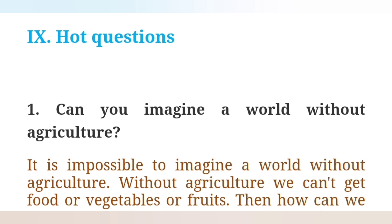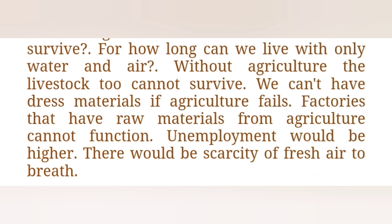Roman numeral IX — Higher Order Thinking Questions. Question 1: Can you imagine a world without agriculture? Without agriculture, we cannot get food, vegetables or fruits. Without agriculture, the livestock too cannot survive. We cannot have dress materials if agriculture fails. The factories that have raw materials from agriculture cannot function. Unemployment would be higher and there would be a scarcity of fresh air to breathe.